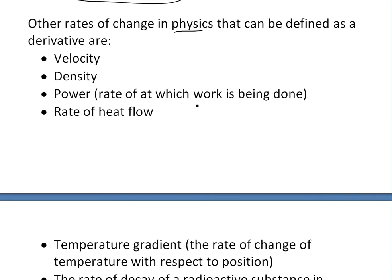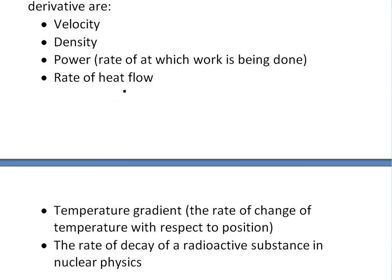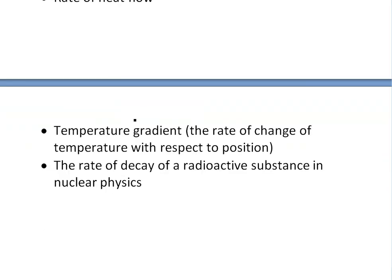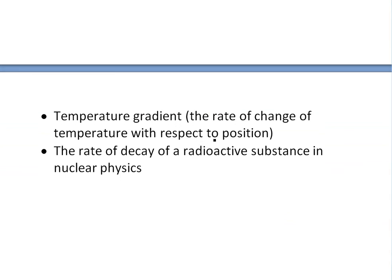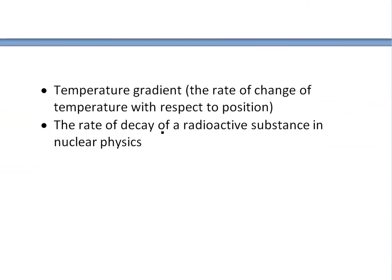Power, or the rate at which work is done, could also be written as a derivative. The rate of heat flow. Temperature gradient - this is the rate of change of temperature with respect to position. If you have a metal rod, it might be hotter at different places, and the rate of change could be written as derivative. Also the rate of decay of a radioactive substance in nuclear physics.